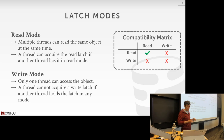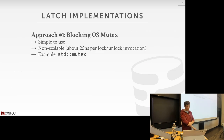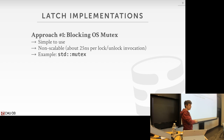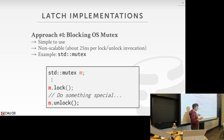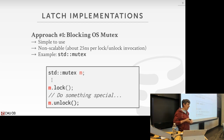Let's talk about how you actually implement a latch in a real system. The first approach is the one you're most familiar with from systems or OS courses: a blocking OS mutex. This is the simplest thing to use because it's built into the language. In C++, the standard template library has std::mutex — you declare it, call lock, do something on the protected object, then call unlock. Does anyone know how this actually works in Linux?